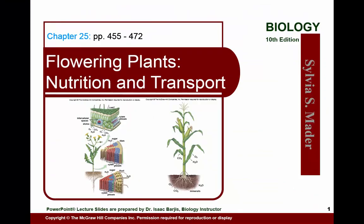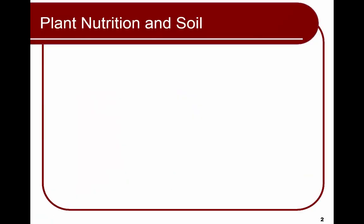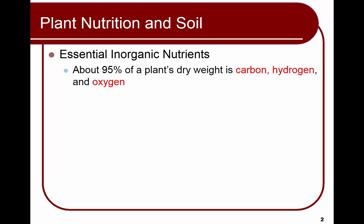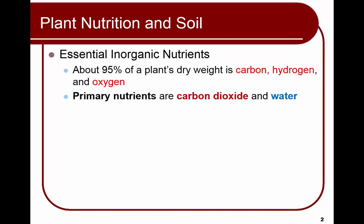Today we're going to start out by talking about how things like food, water, and minerals are transported through our plants. We'll start by talking about our soil. About 95% of a plant's dry weight — meaning without water — is going to be carbon, hydrogen, and oxygen. The primary nutrients are carbon dioxide and water, because that's what they need for photosynthesis.